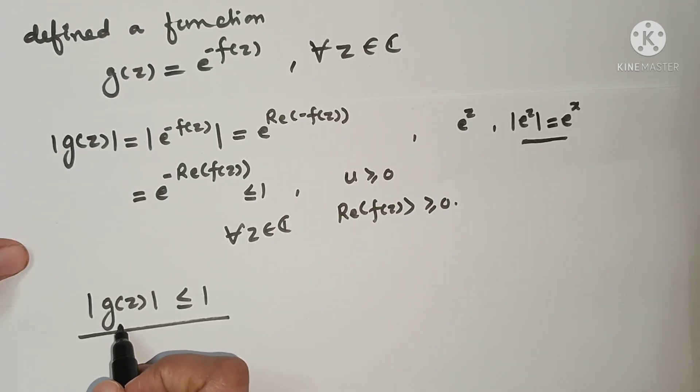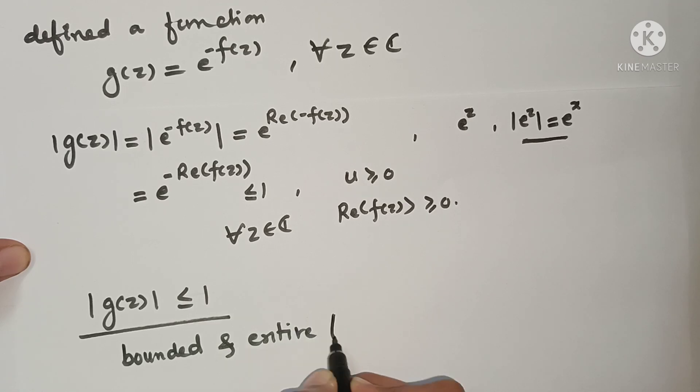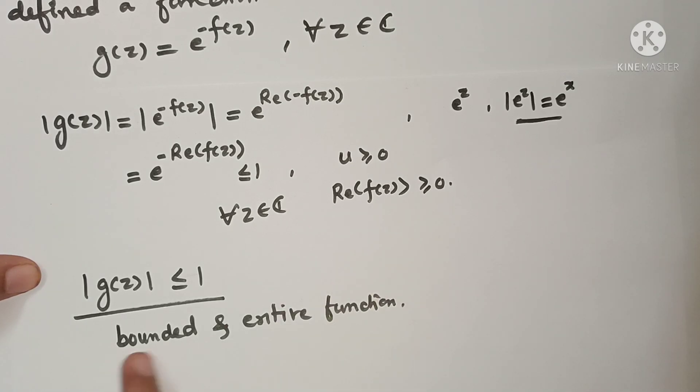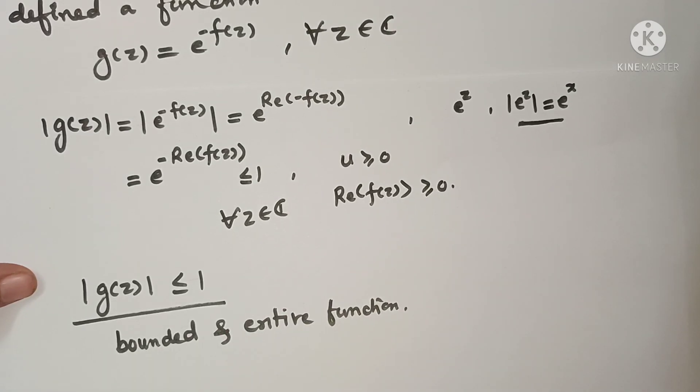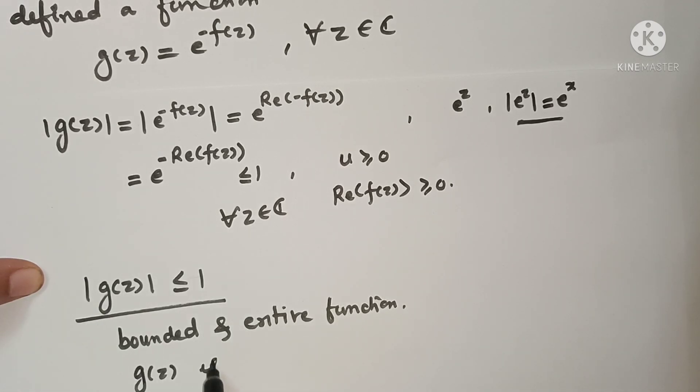We have defined the function G(z). This is a bounded function and entire function. If it is bounded and entire function, then by Liouville's theorem, we say that this function G(z) is a constant function.